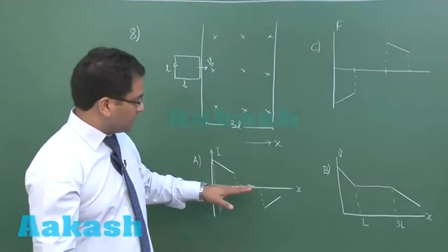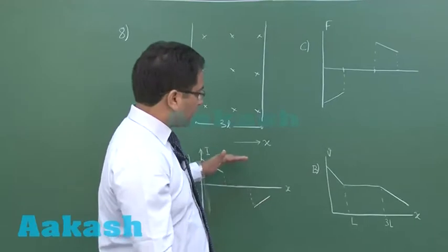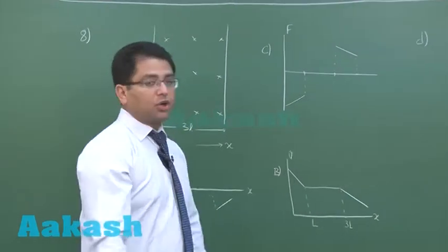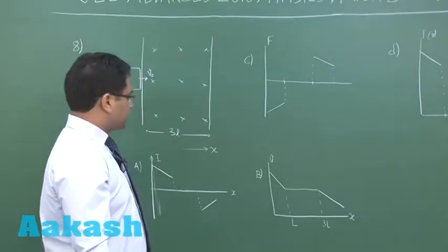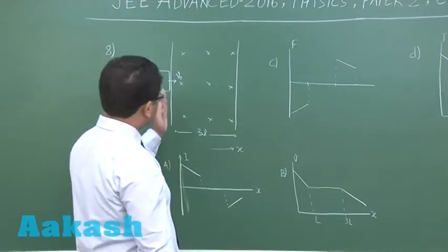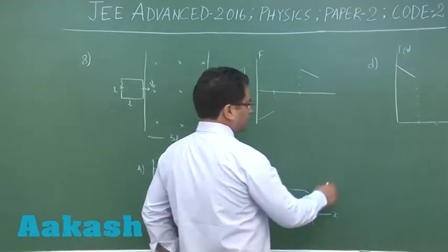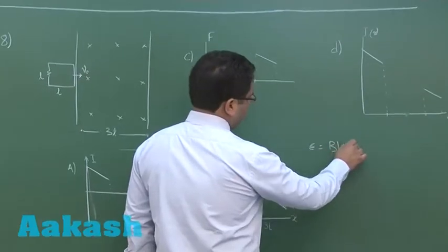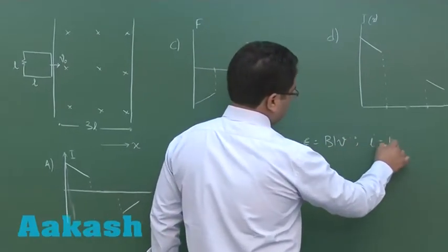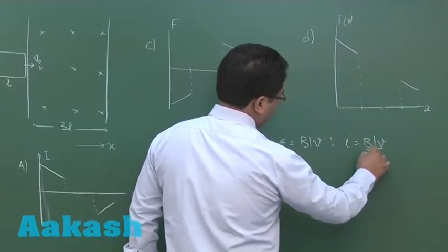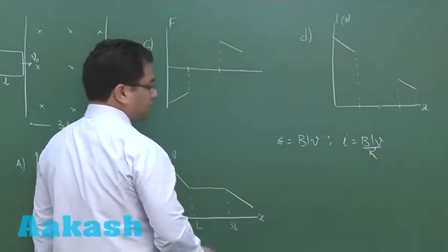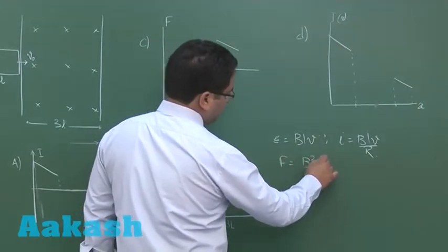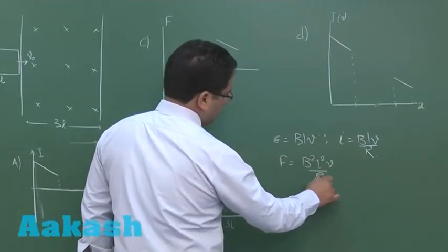Based on that, we need to choose the correct option of I, V, F and I. First, let us talk about velocity. During the entering phase, the EMF would be BLV and the current would be BLV/R. Now let us try to see the force, which is BIL, so that gives B²L²V/R.